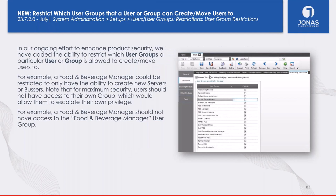We've also added the capability to restrict users to selected user groups. For example, a food and beverage manager should have access to only their servers and bussers, not other user groups. Under the Restrictions tab > User Group Restrictions sub-tab, mark the eligible user groups and save. This is ideal for department managers rather than super users — controlling which users they can edit or manage.